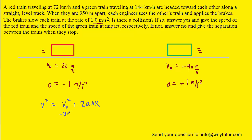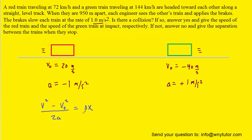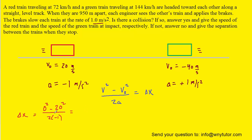We will plug in the known values for the final velocity, initial velocity, and acceleration for the red train. Note again that we're using 0 for the final velocity. When we compute this, we get 200 meters. So that's how far the red train will travel in order to come to rest. We'll do the same thing now for the green train — we'll use this formula to find how far it travels to stop.